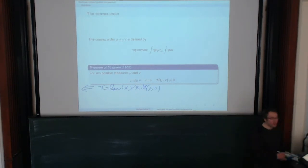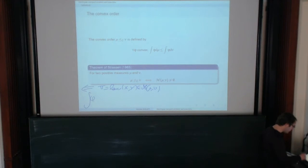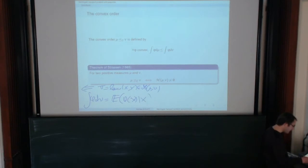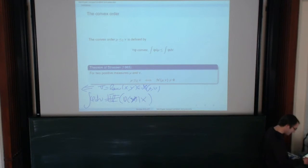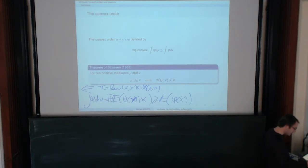If mu and nu are the marginals of a Martingale transport plan, you have this implication because of the conditional Jensen inequality. To show this: you take a joint law of X, Y in the set of Martingale transport plans and want to show they are in convex order. You integrate a convex function phi with respect to nu, which equals the expectation of phi(Y). Taking conditional expectation with respect to X and applying Jensen's inequality, this is bigger than the expectation of phi(X), which equals the integral of phi with respect to mu.